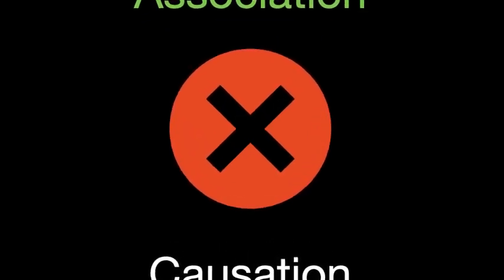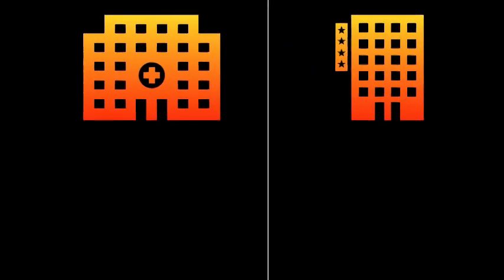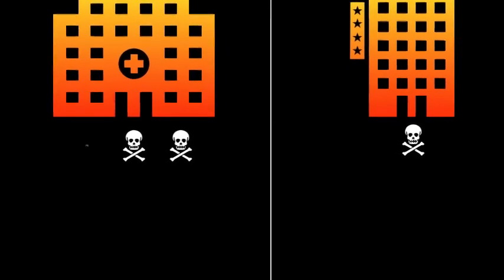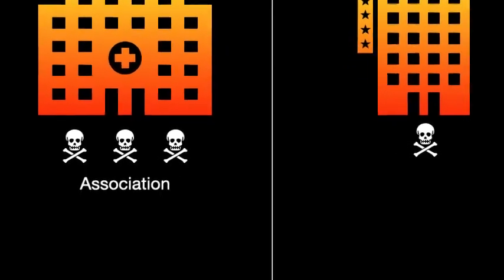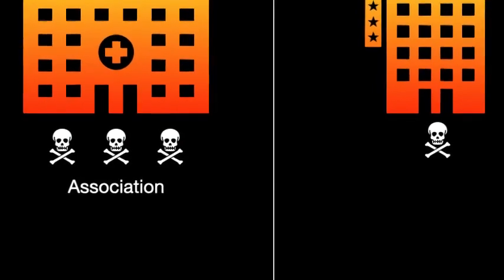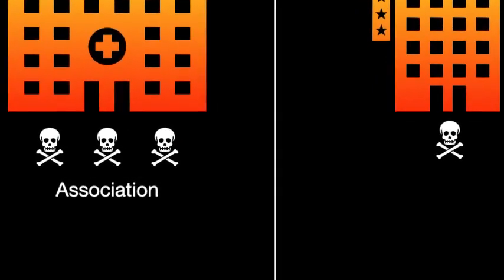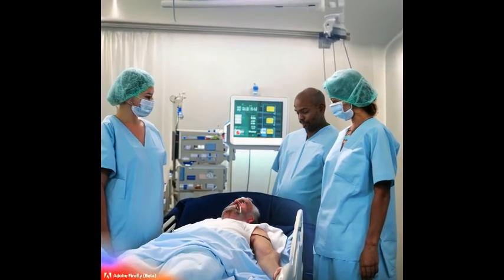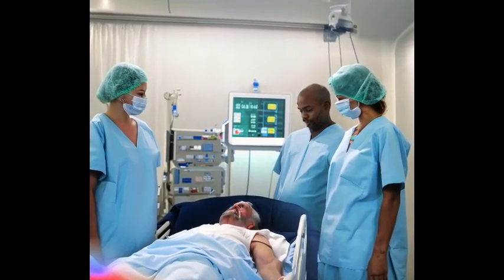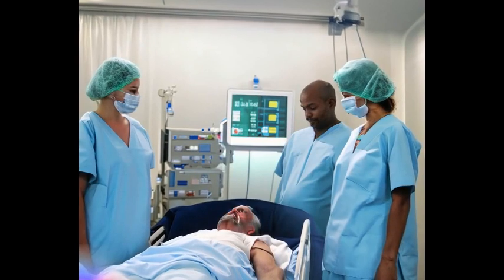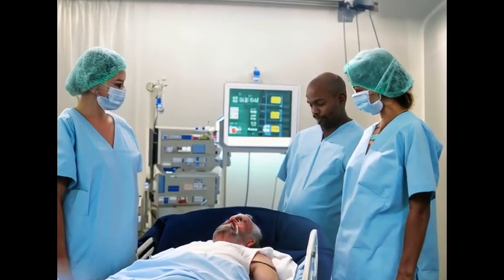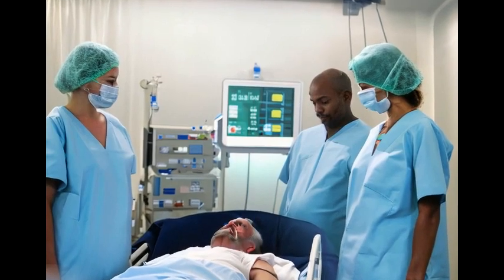For example, if we compare death rates in hospitals and in hotels, we find that hospitals have more deaths than hotels. But this is an association, not a causation. People who come to the hospital are more sick, and that sickness is the cause of the mortality, not the hospital itself. So being hospitalized is just a risk factor for dying — it's not the cause of dying. That shows you how observational studies cannot establish causation.